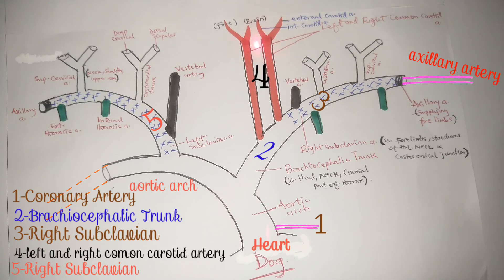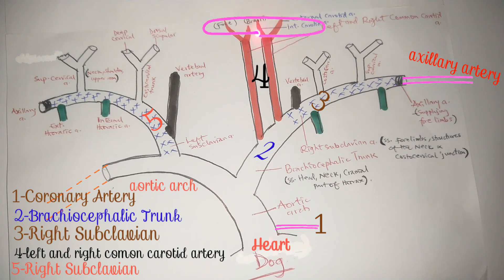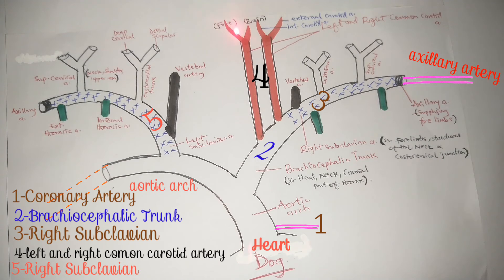At a certain point, each of the common carotid arteries bifurcates to give rise to the internal and external carotid artery. The internal carotid artery supplies the brain, while the external carotid artery supplies the structures of the face.